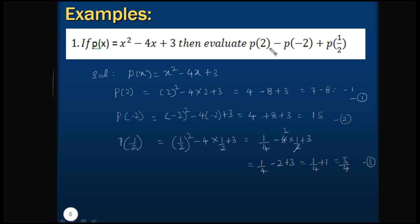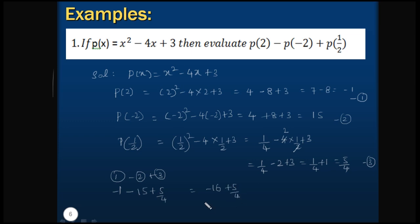According to the question we have to find equation 1 - equation 2 + equation 3. The value of equation 1 is -1, equation 2 is 15, and equation 3 is 5/4. So this equals -1 - 15 + 5/4, which is -16 + 5/4. Taking LCM: (-64 + 5) / 4, that is equals to -59/4.